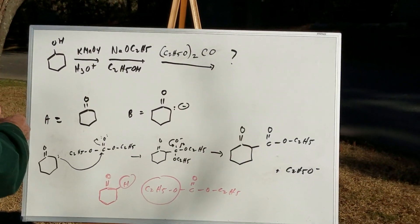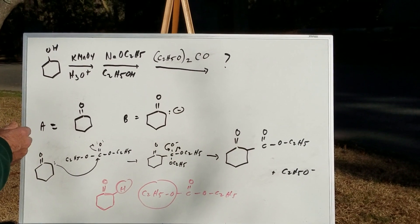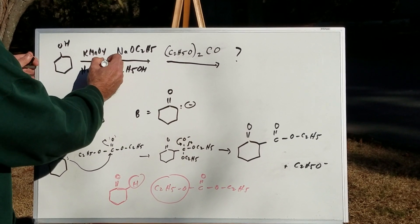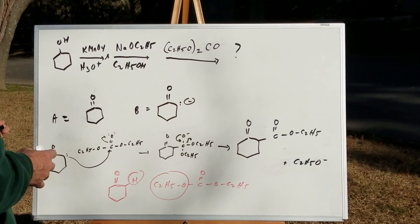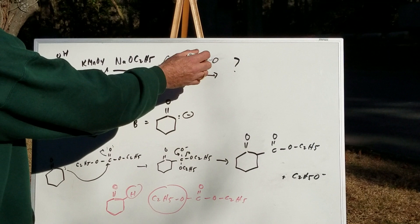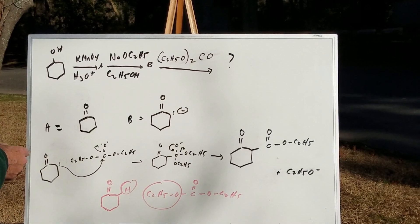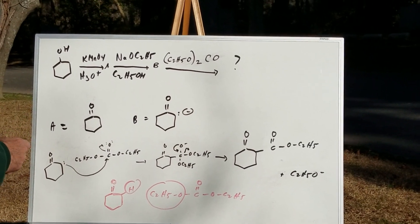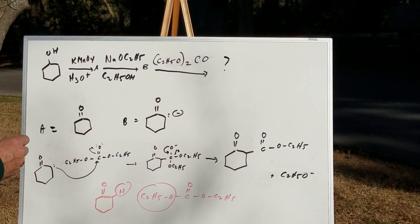What we're going to do is we're going to take cyclohexanol and treat it with KMnO4. And then once we get this product, I can call this A. I'm going to then hit it with sodium methoxide and ethanol to get a new product B. And then I'm going to treat it with this reagent, which you probably are not too familiar with, called diethyl carbonate. And we're going to get the final product.